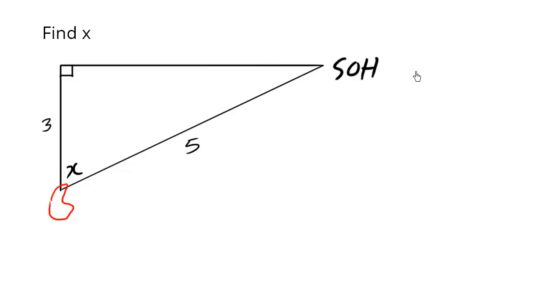It's always a good idea to write SOHCAHTOA. We have the adjacent and the hypotenuse. So for certain, we're going to be using the cosine. The C stands for cos.